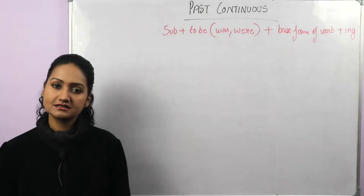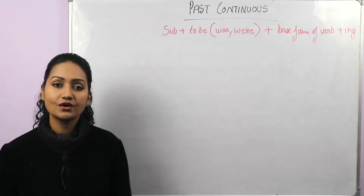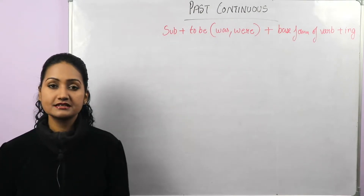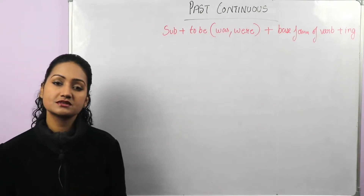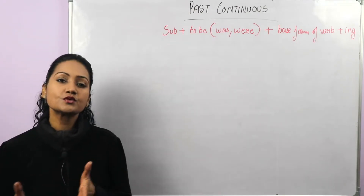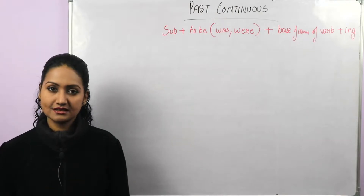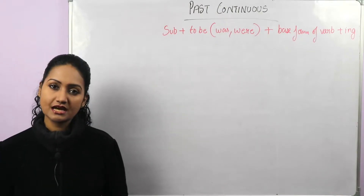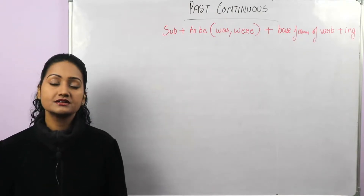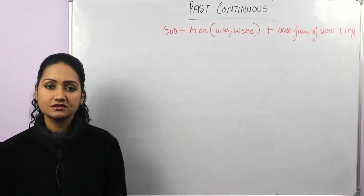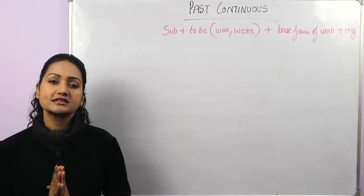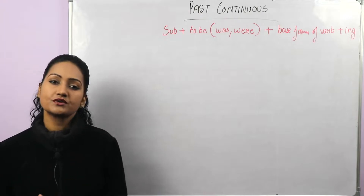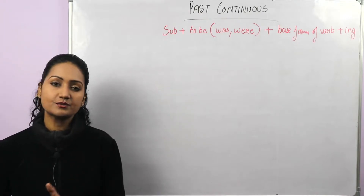Continuous tenses are also called progressive tenses. Past continuous tense is sometimes also called past progressive tense. This tense is very important in English. It is used to describe an action that was happening or going on at some point of time in the past.